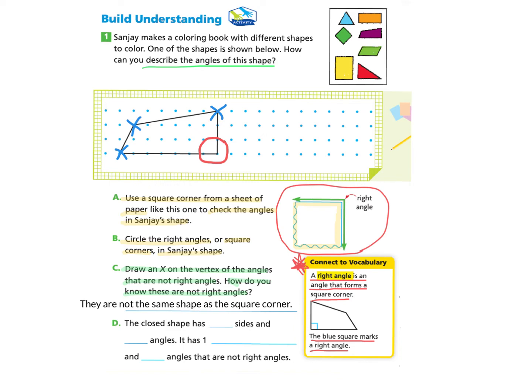Now we're ready to answer part D: The closed shape has blank sides and blank angles. We can count the number of sides: one, two, three, four. There are four sides, and we know there are four angles because we've either circled or marked an X on each one. It has one right angle, and three angles that are not right angles.